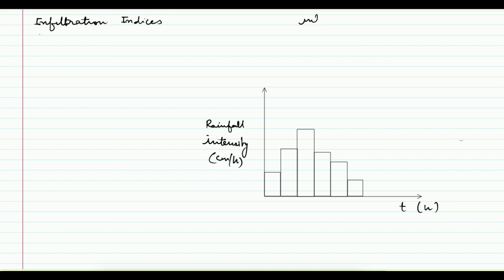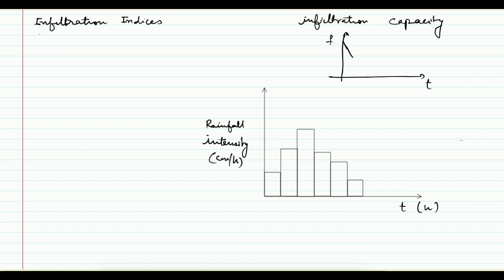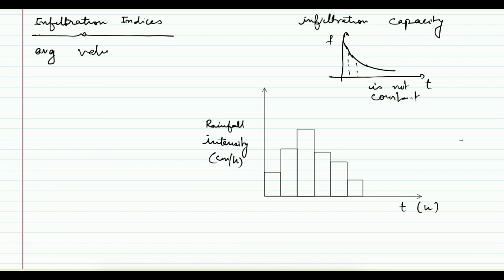Last time we started with infiltration and understood what infiltration is, then what infiltration capacity is, and how to measure it. We saw the basic plot between infiltration rate and time — as rainfall starts, infiltration is initially more, but as rainfall continues, the infiltration rate comes down and attains a constant value. So infiltration rate is not constant at every time; it changes with time. But for design and analysis purposes, like when we do hydrograph analysis, we assume an average constant value of infiltration rate.